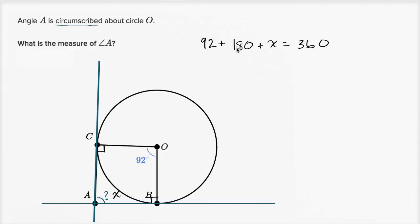So we could subtract 180 from both sides, and we would have 92 plus x is equal to 180. If we subtract 92 from both sides, we get x is equal to—let's see, 180 minus 90 would be 90, and then we're just going to subtract two more, so x is equal to 88. So the measure of angle A is 88 degrees.